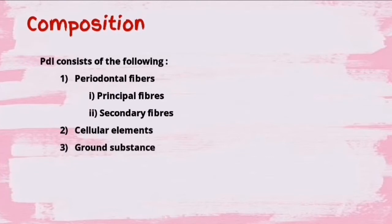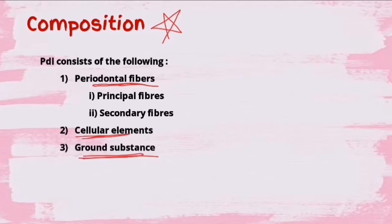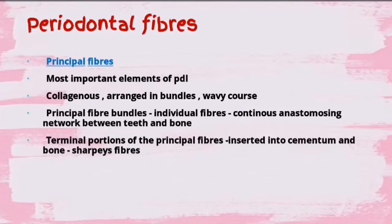Coming to the composition of periodontal ligament - very important. PDL consists of three components: fibers, cells, and ground substance. Periodontal fibers are again divided into two types: principal fibers and secondary fibers. Just remember that the PDL has three components: periodontal fibers, cellular elements, and ground substance.